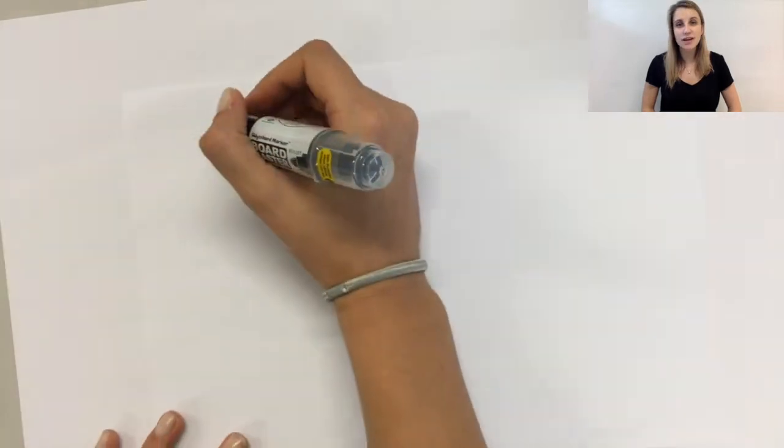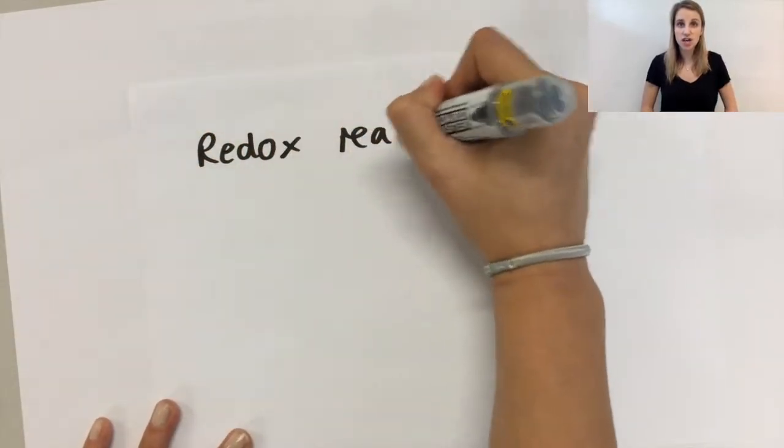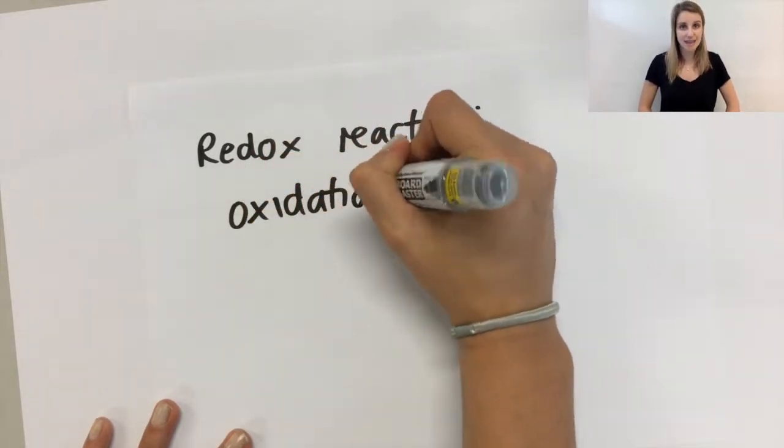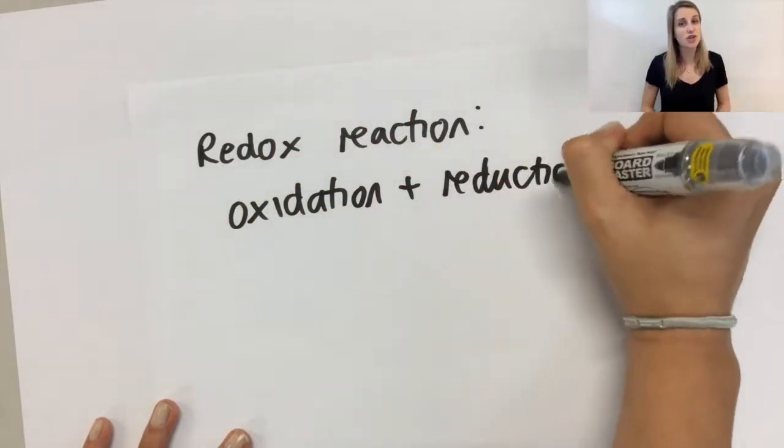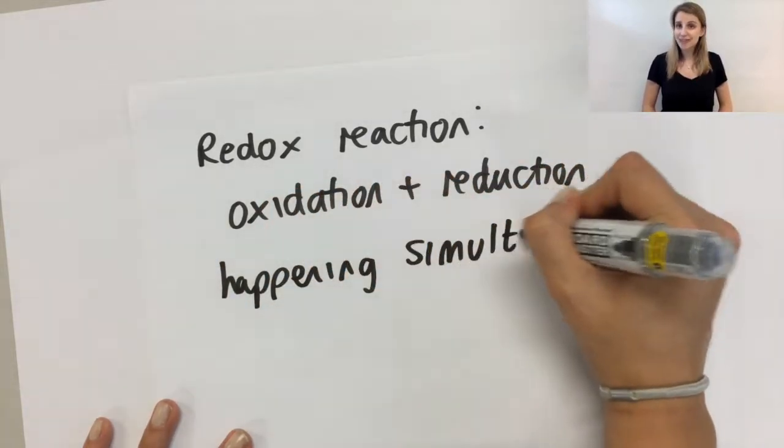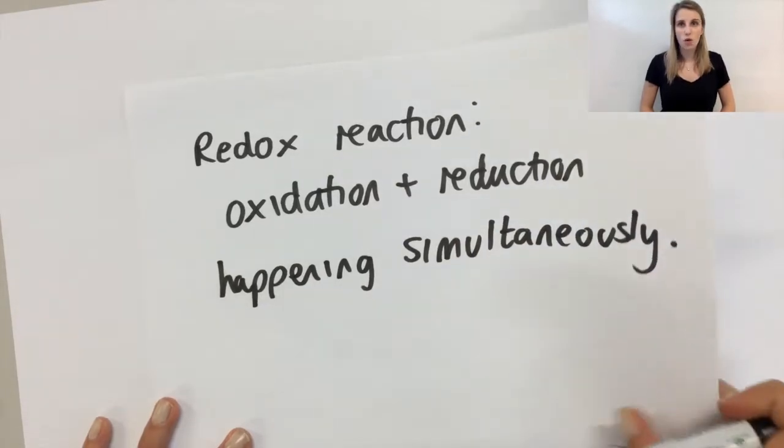One last thing that I'd like to mention is that we can also call this a redox reaction. So redox just means that you've got oxidation and reduction occurring simultaneously, which is exactly what you've got here. So the Pb2+ undergoes reduction while at the same time the Br- undergoes oxidation.